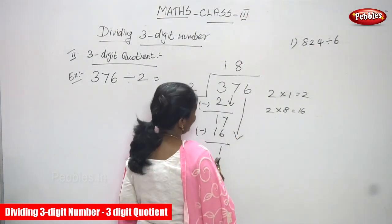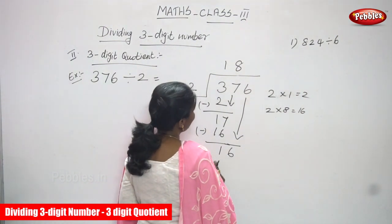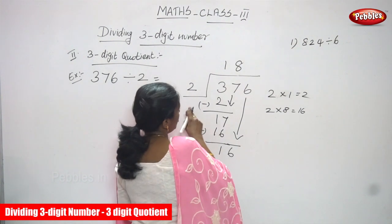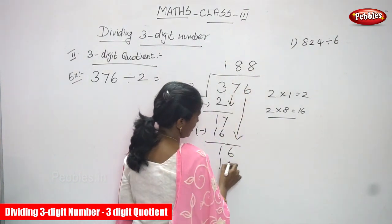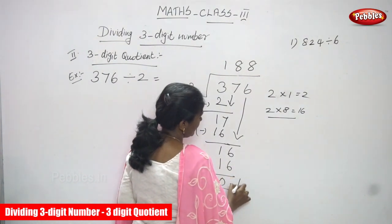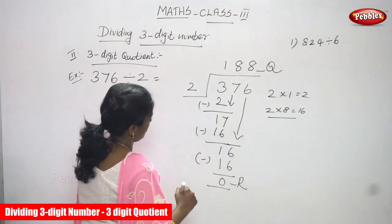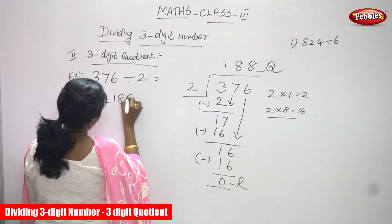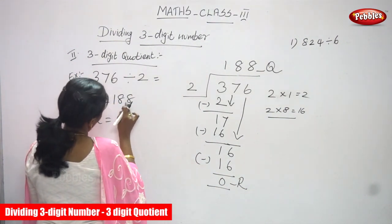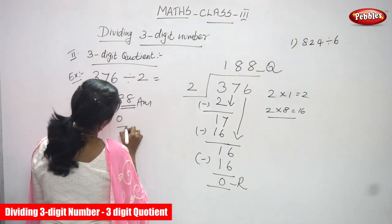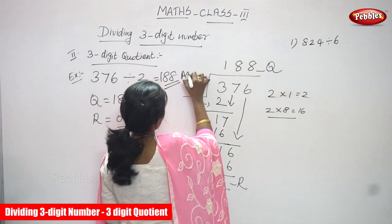So you have to bring down the 6 because 1 is less than 2 — it is not enough to divide. Bring down the 6. Now it is 16. 16 is greater than 2, so use the 2 table. 2 eights are 16, so write 8 in the ones place. 16 minus 16 you can get 0. This is the remainder and this is the quotient. So 188 is the right answer. Quotient is 188 and remainder is 0 — a 3-digit quotient.